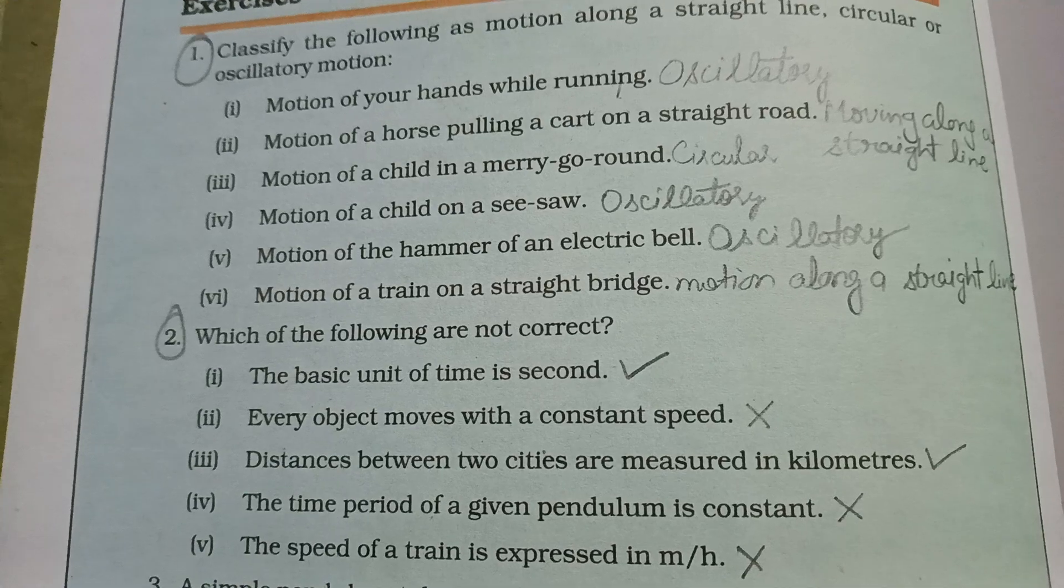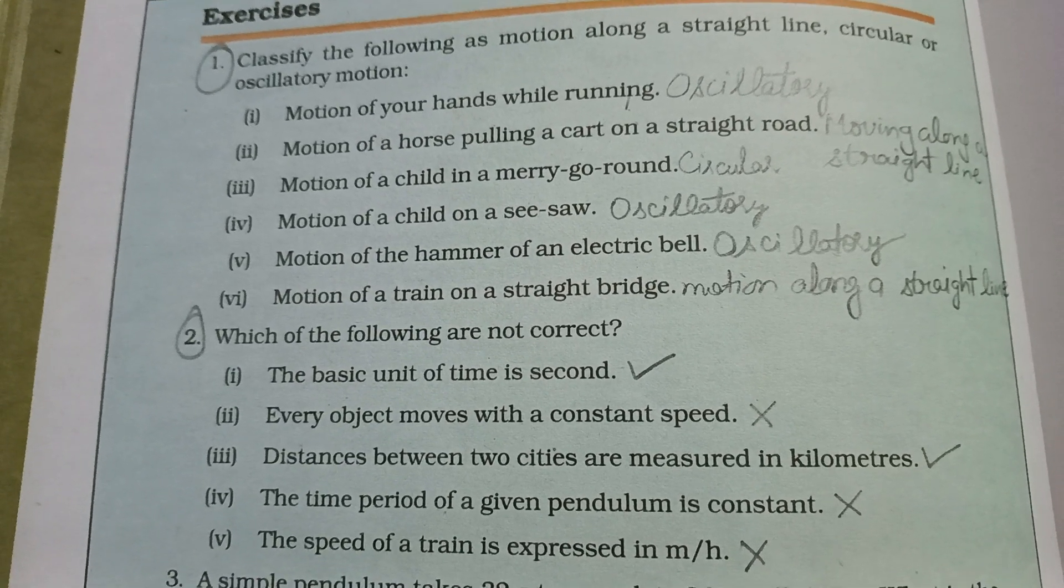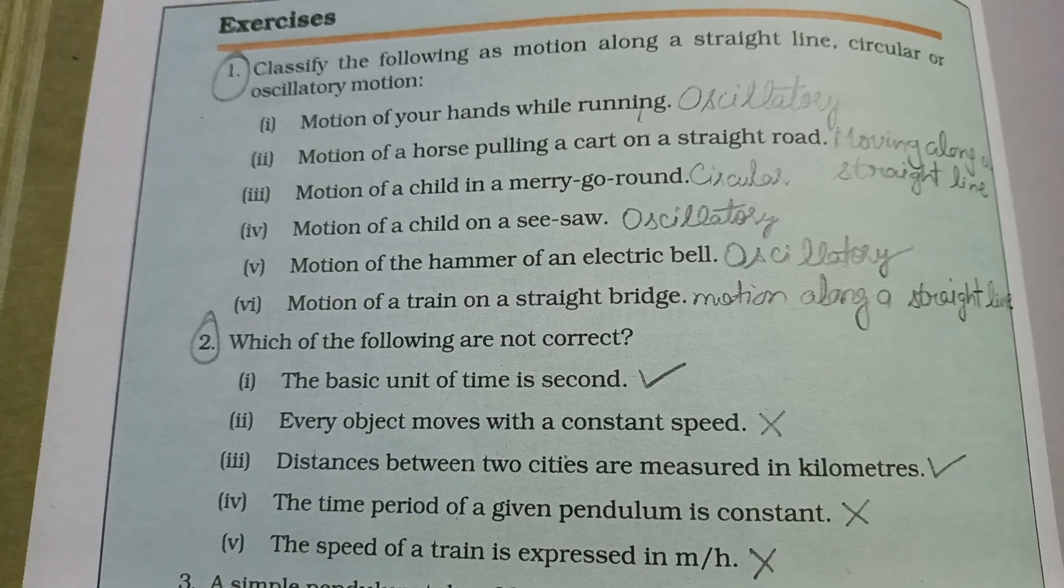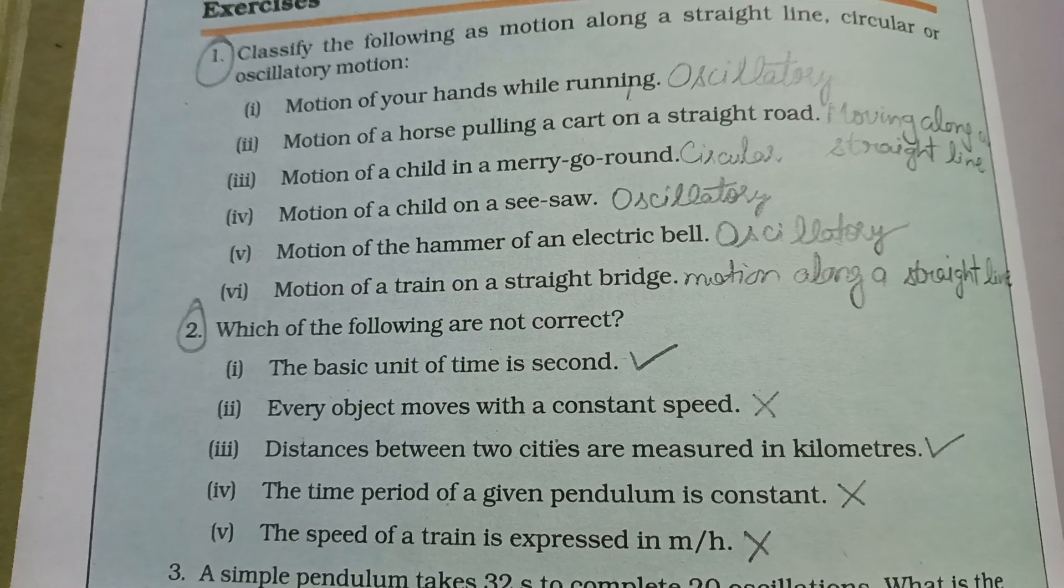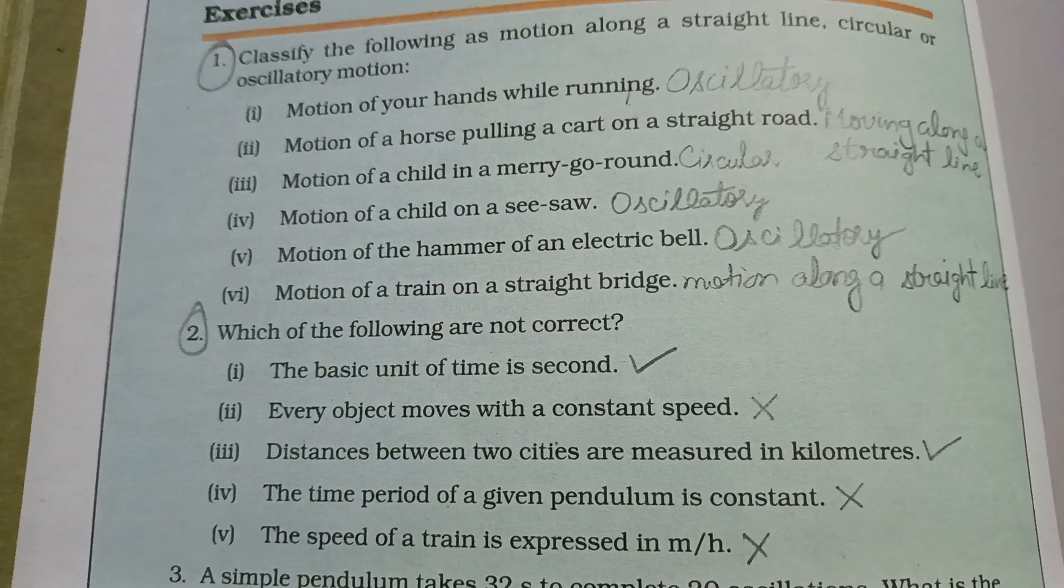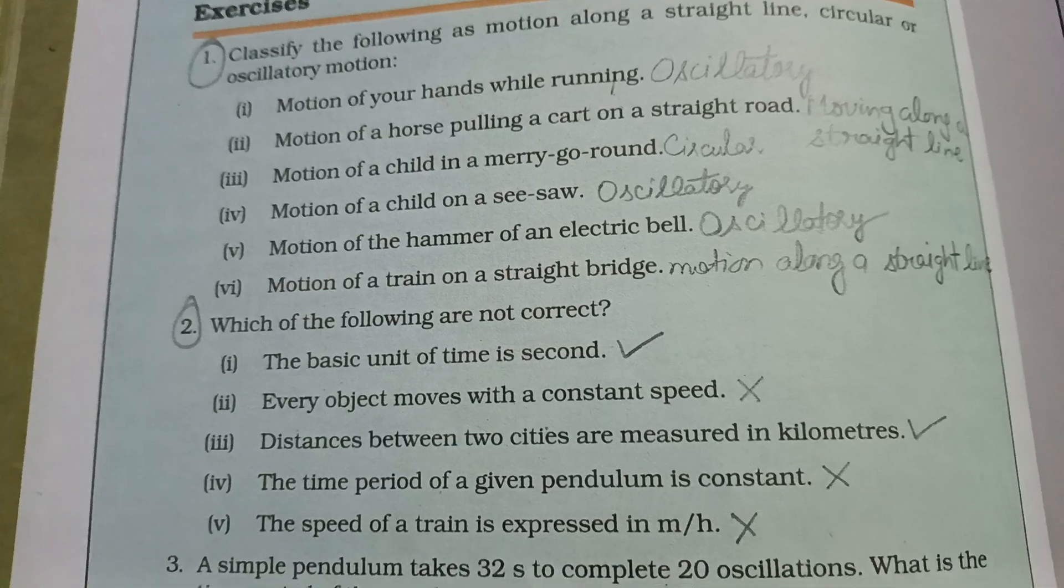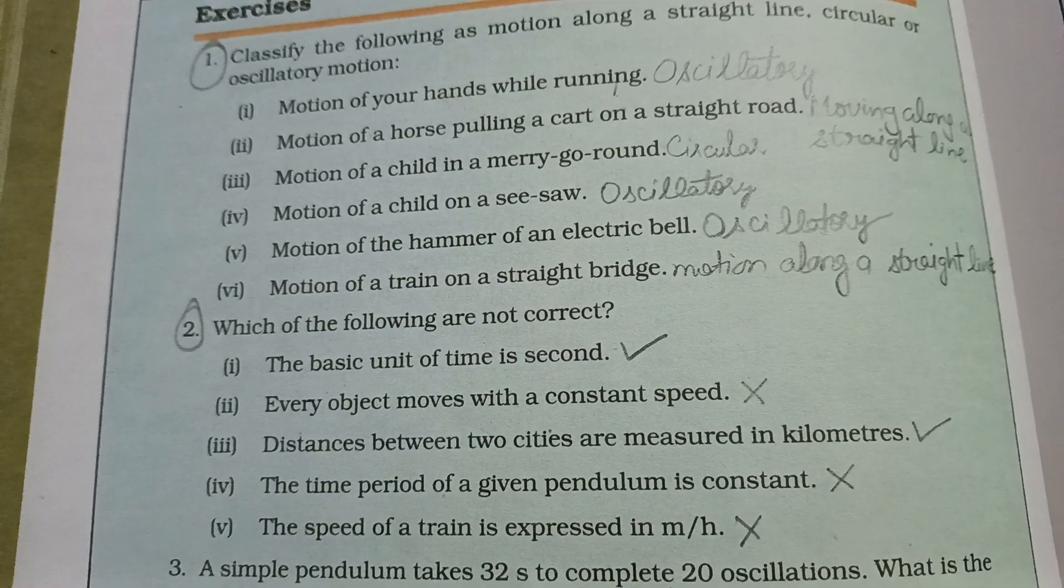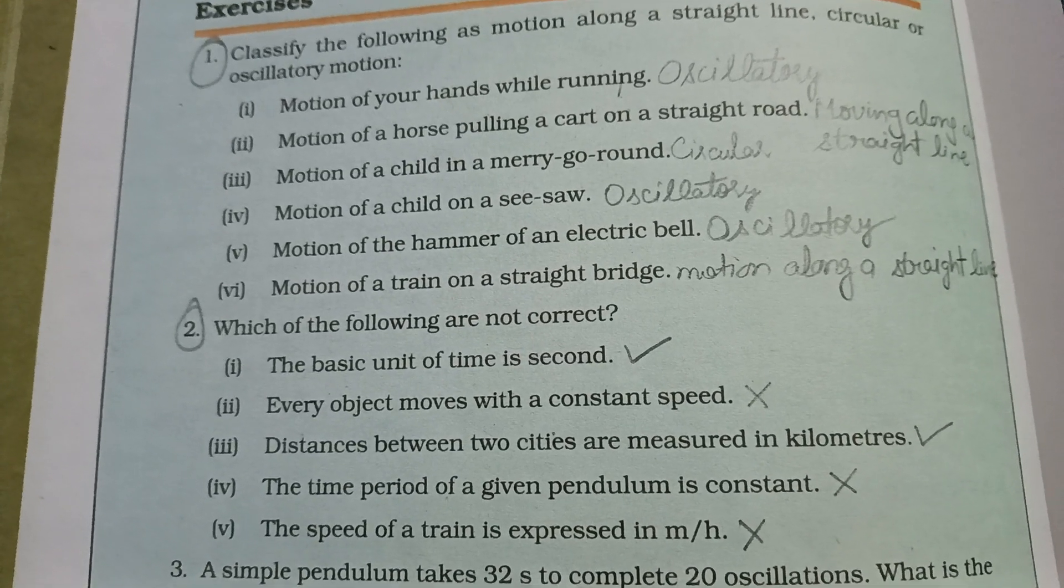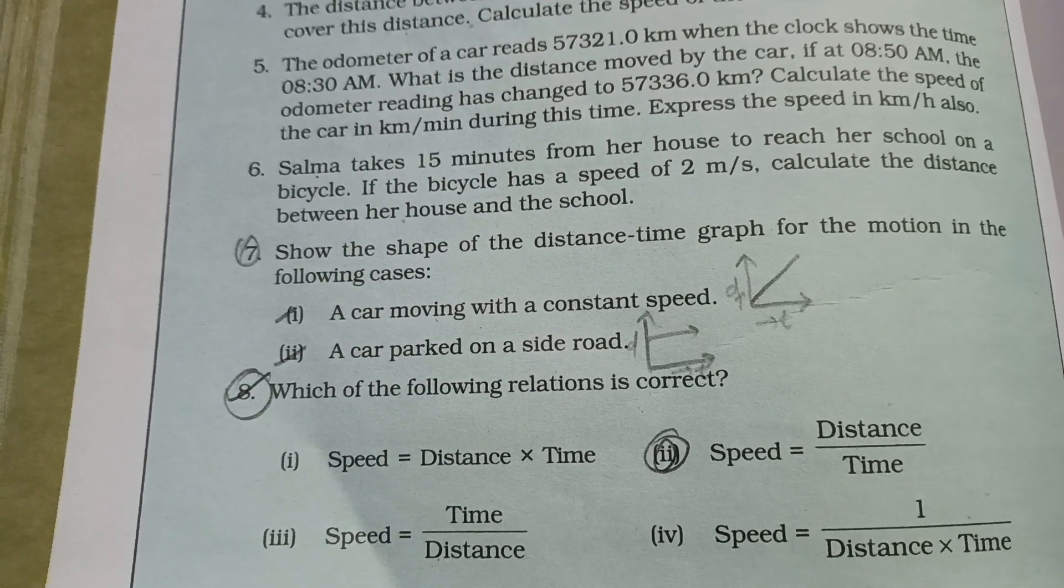Next, humein straight batana hai ki wo correct hai ya nahi. Basic unit of time is second - that is true. Basic unit of time ka second hai. Every object moves with a constant speed - that is false. Sabki speed different hoti hai. Distance between two cities measured in kilometer - that is correct. Time period of a given pendulum is constant - that is not correct. Speed of a train is expressed in meter per hour - that is also not correct.